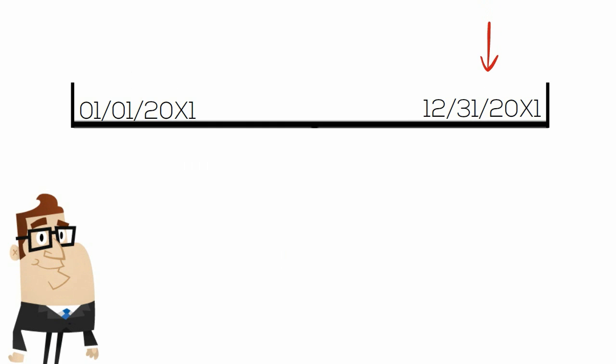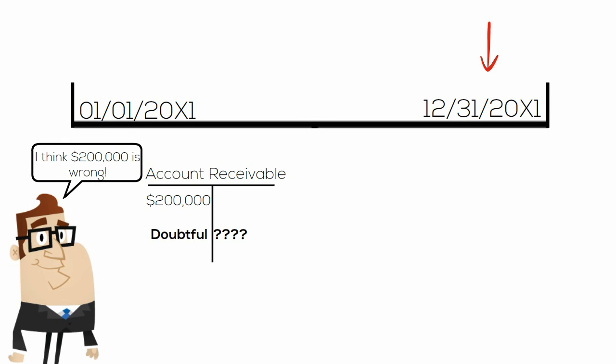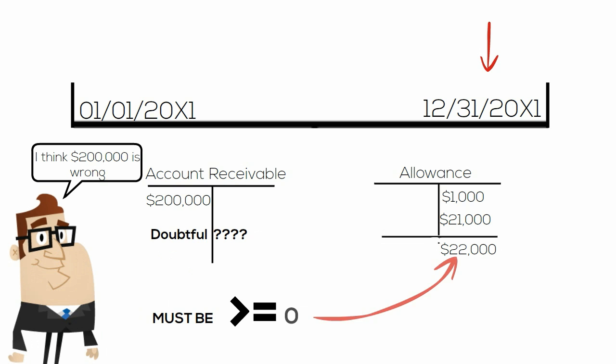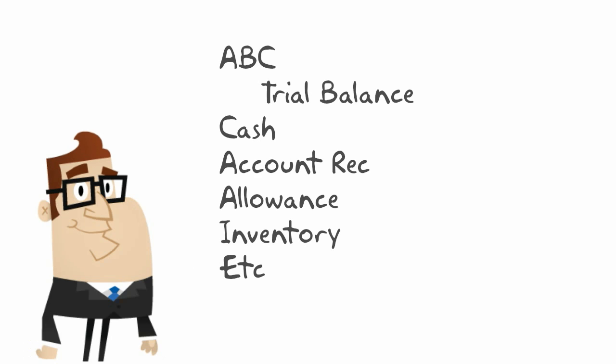At the end of each year, management is responsible for estimating how much of its gross receivables are doubtful and then recording an adjusting entry to the pre-adjusted balance in the Allowance for Doubtful Accounts account and to the Bad Debt Expense account, to arrive at the adjusted Allowance for Doubtful Accounts balance, which must always be greater than or equal to zero on the credit side of the account.